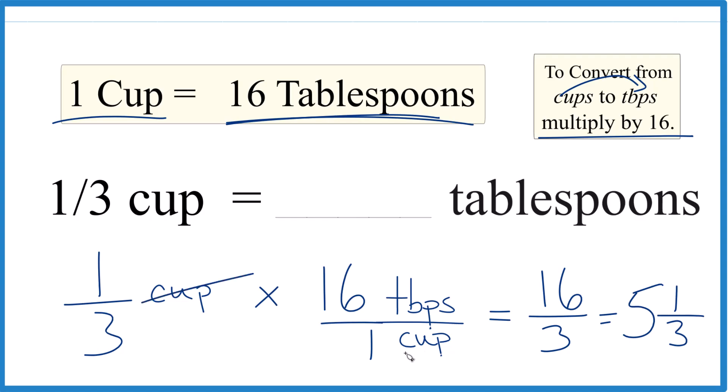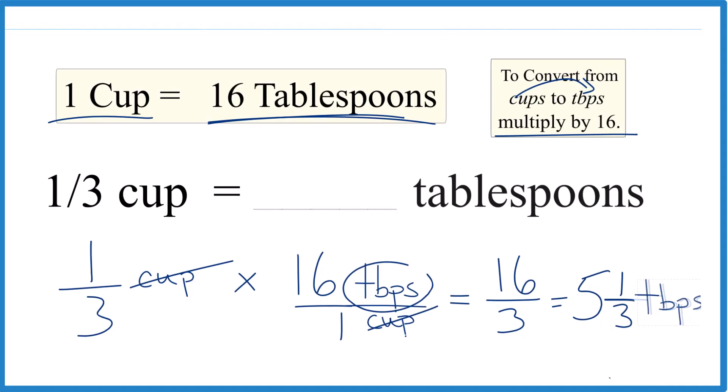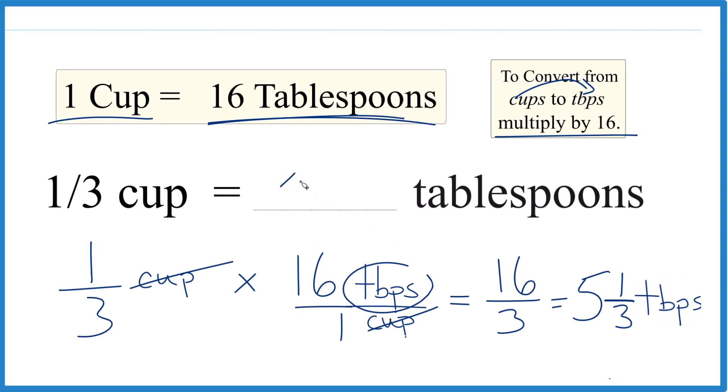And because cups cancel out, we're left with tablespoons. Those are the units. That's what we're looking for. So it turns out that one third cup is equal to five and one third tablespoons.